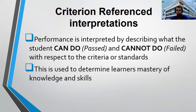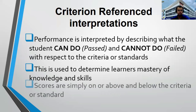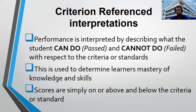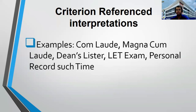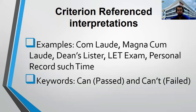This is used to determine learners' mastery of knowledge and skills. Scores are simply on or above the criteria — meaning you passed — or below the criteria — meaning you failed. Examples may include cum laude, magna cum laude, dean's lister, LET exam, and personal records such as time. For example, you can run 5 miles in 5 minutes — that is your personal record. Keywords include 'can' meaning passed, and 'cannot' meaning failed. When you recognize these keywords, think immediately of criterion reference interpretations.